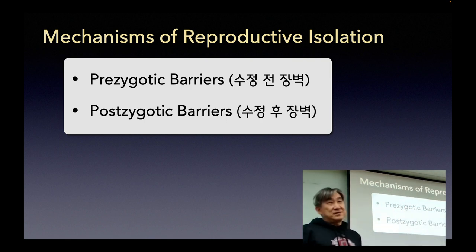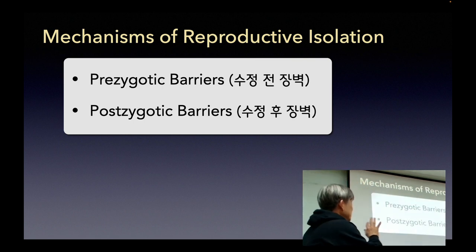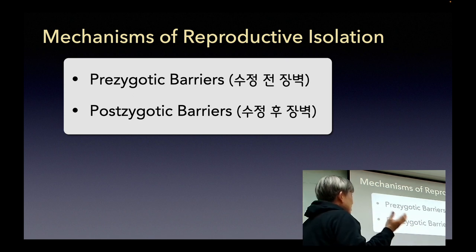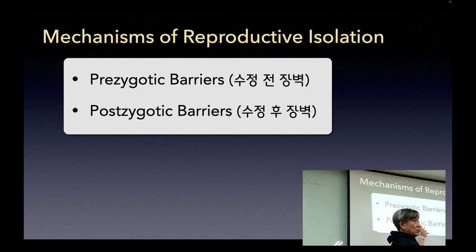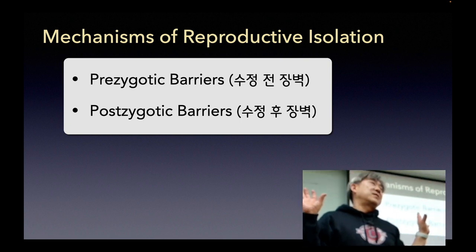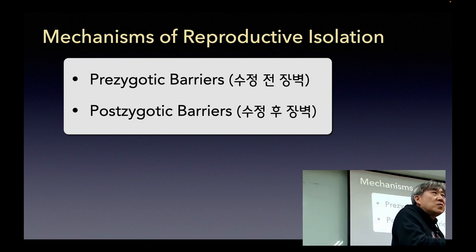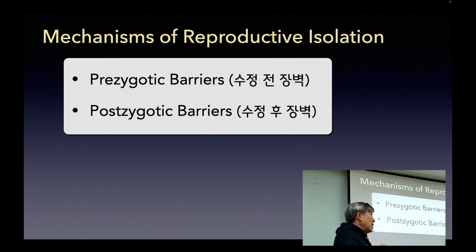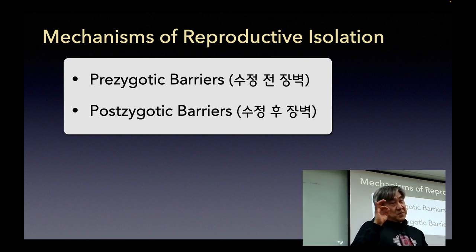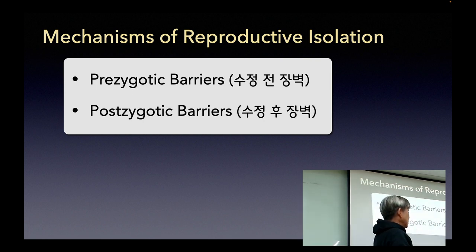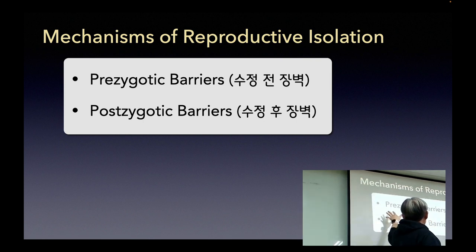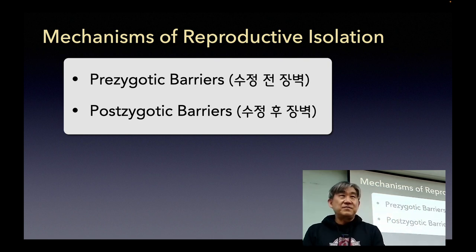We just group several different reasons as mechanisms of reproductive isolation into two big groups. One is called the pre-zygotic, and the other one is post-zygotic. Pre versus post — before and after. Zygotic means fertilization. So there may be some specific reasons that keep a particular sperm and egg from even fusing together — we describe that as fertilization cannot occur. We call this a pre-zygotic barrier.